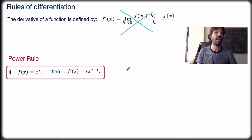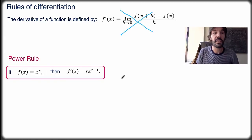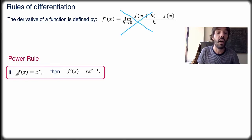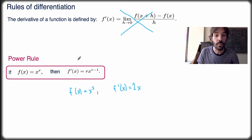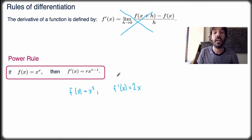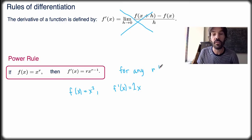The first rule we'll study is called the power rule. In a video before the beginning of this week, I asked you to guess what the derivative of x to the r would look like. We had seen that if f(x) equals x squared, then f'(x) equals 2x. It turns out the rule is very similar: if f(x) equals x to the r, then the derivative is always equal to r times x to the r minus 1. This is true for any r — r doesn't have to be an integer or positive. Any rational number r satisfies this rule.